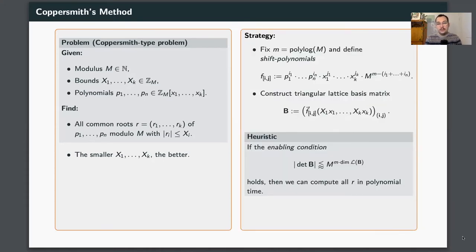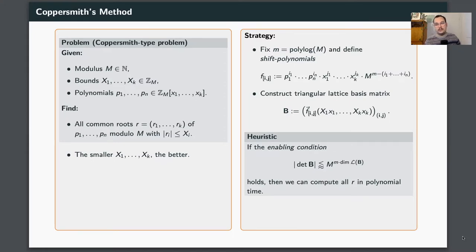Coppersmith suggests the following strategy: first fix a parameter, small m, which is polylogarithmic in the modulus m, and then define so-called shift polynomials. After that, plug in the bounds x1 up to xk into these polynomials, and construct a triangular lattice basis matrix B from the coefficient vectors of the shift polynomials. A key heuristic tells us that if the enabling condition holds — namely that the determinant of B is upper bounded by roughly M to the power of small m times the lattice dimension — then we can compute all roots R in polynomial time.